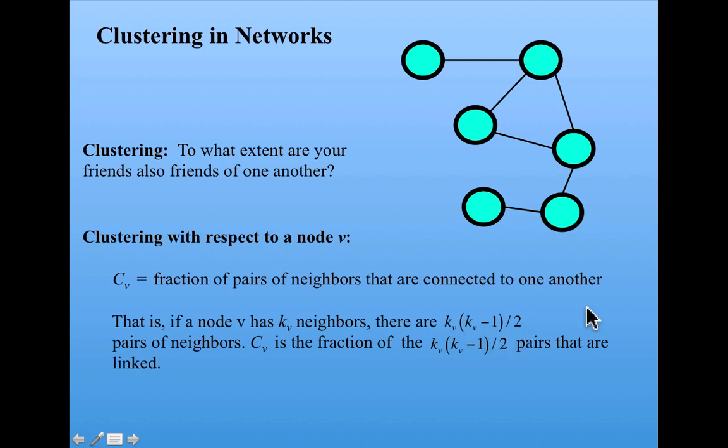If you're not mathematically inclined, you don't have to worry about how this is derived. Just believe it. In terms of this, we define C_v as the fraction of all the possible pairs that are linked.